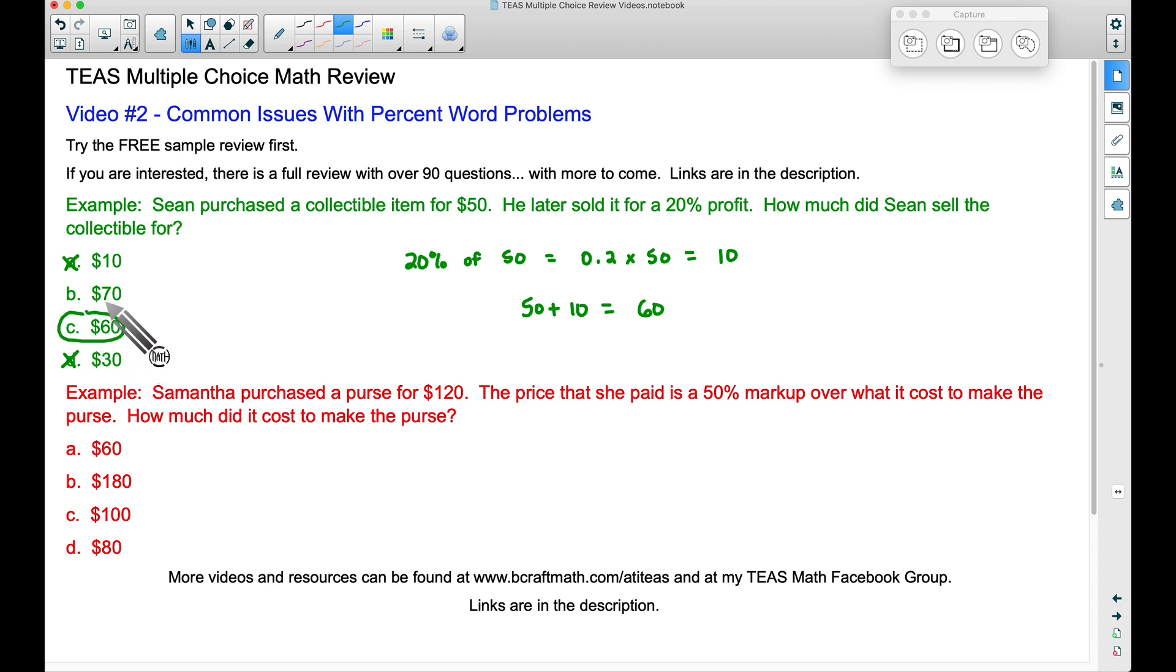Now you may have picked B if you had just simply taken $50 and you weren't paying attention and maybe you just thought this said 20 bucks because 50 bucks plus 20 bucks is 70 bucks, but that's not correct. We have to find 20% of 50.